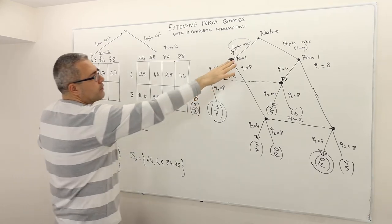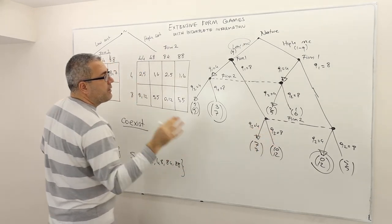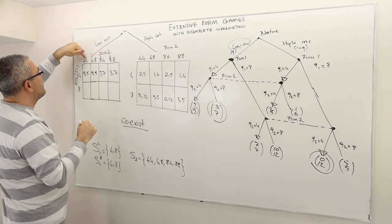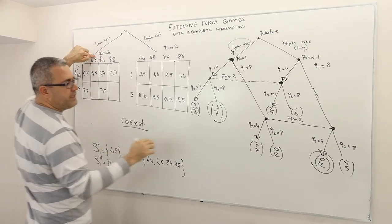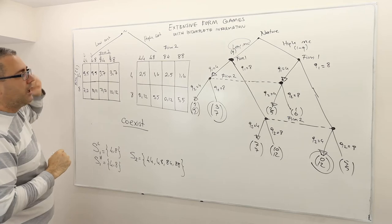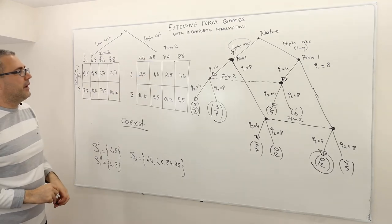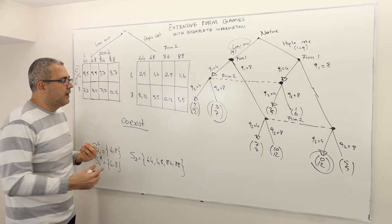When low cost firm one plays eight, the payoffs are either of those depending on what firm two is playing — we look at firm two's second actions. Whenever you see four, the payoff is seven, seven; whenever you see eight, the payoffs are ten, twelve. And so this is the matrix — the normal form representation — and I just filled out those matrices.